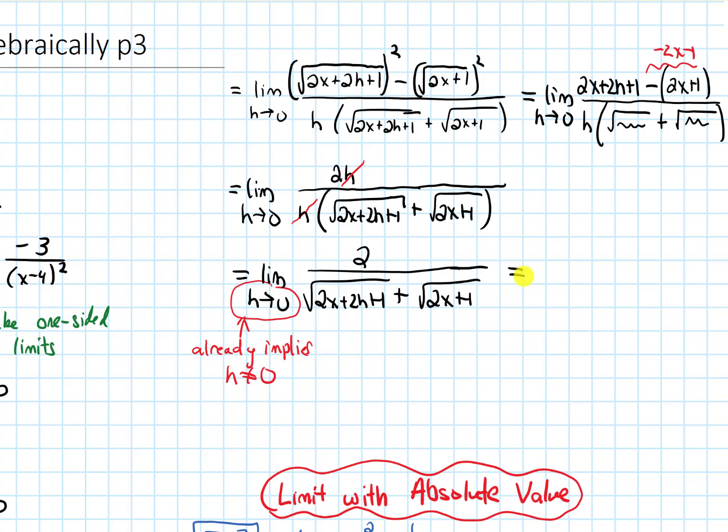All right. So now let's plug in. We get 2 on the top. On the bottom, I'll get square root of... First I'll get 2x plus 1 because the 2h term just becomes 0. And then plus another root 2x plus 1. So I get 2 plus... And then something plus something is 2 of that something. So I get 2 root 2x plus 1 on the bottom. Now I can cancel 2s and get 1 over root 2x plus 1. And that is our answer.